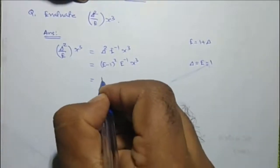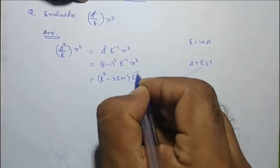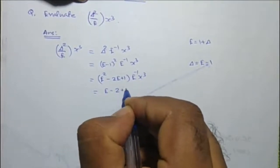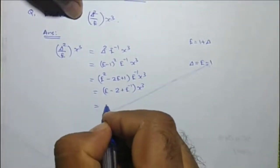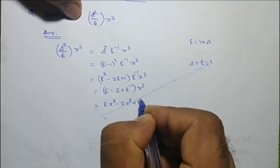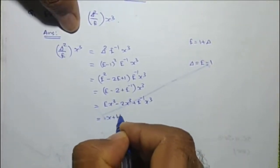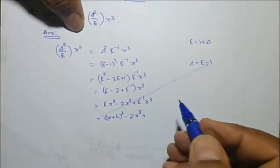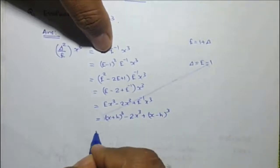This equals E squared minus 2E plus 1 into E raised to minus 1 of x cubed, which equals E minus 2 plus E raised to minus 1 of x cubed, giving E x cubed minus 2 x cubed plus E raised to minus 1 of x cubed. Now E x cubed equals x plus h cubed and E raised to minus 1 x cubed equals x minus h cubed.